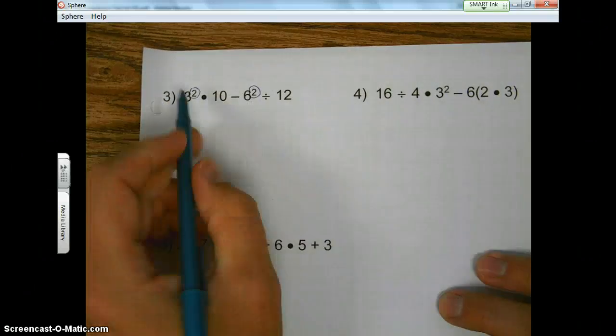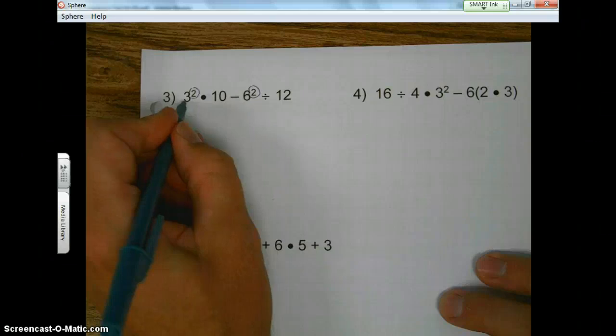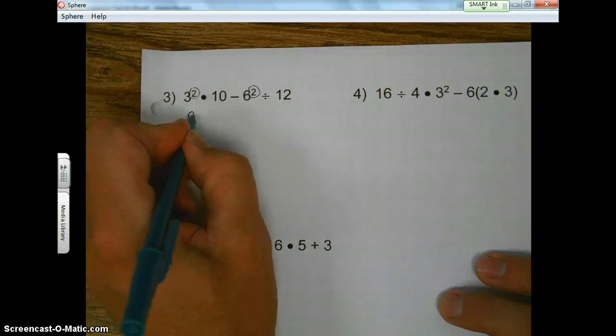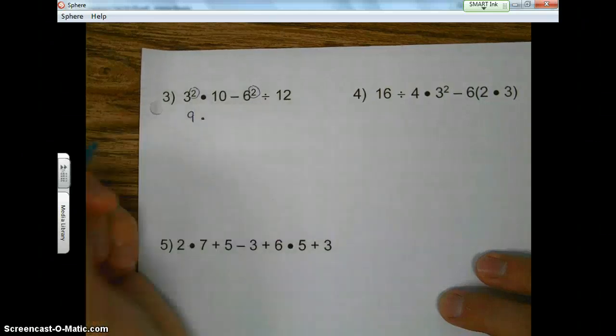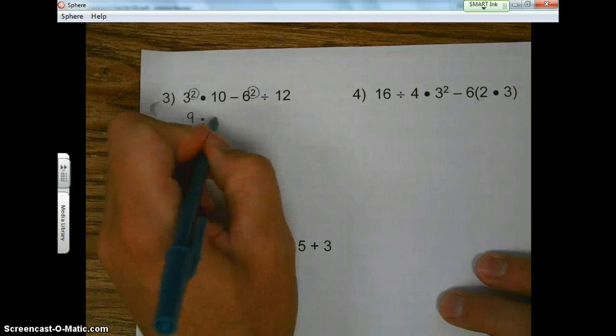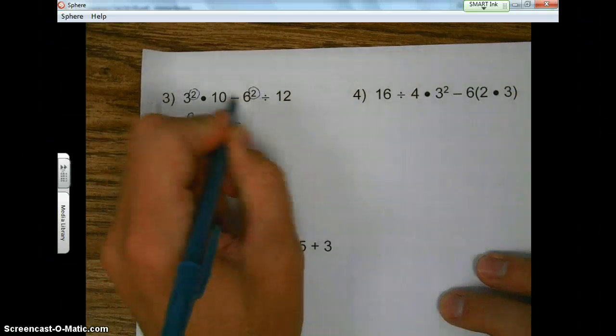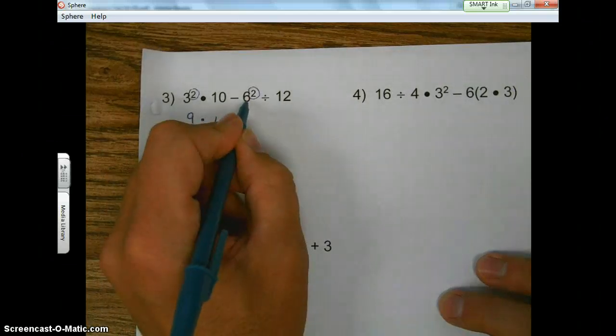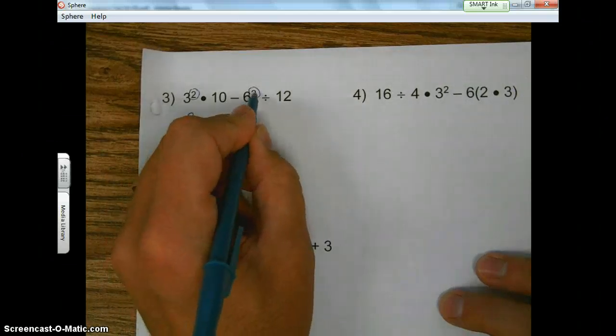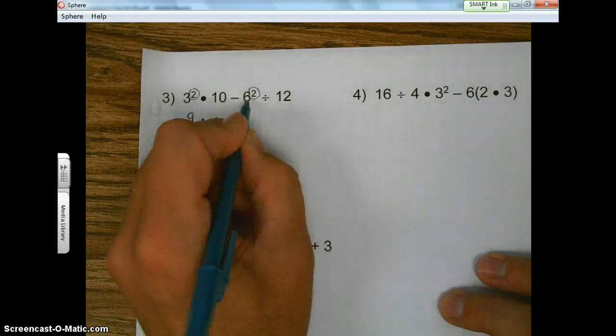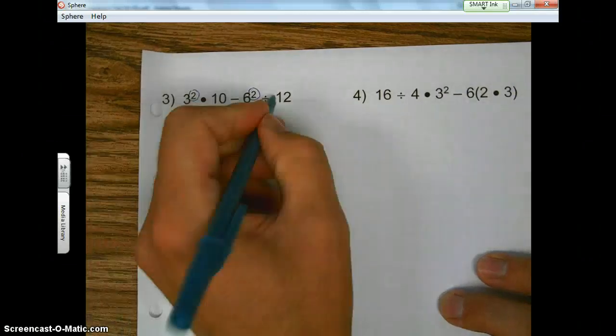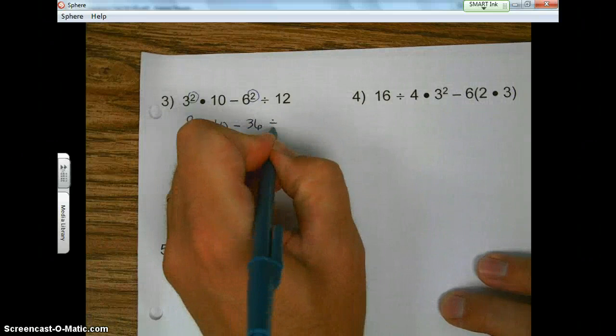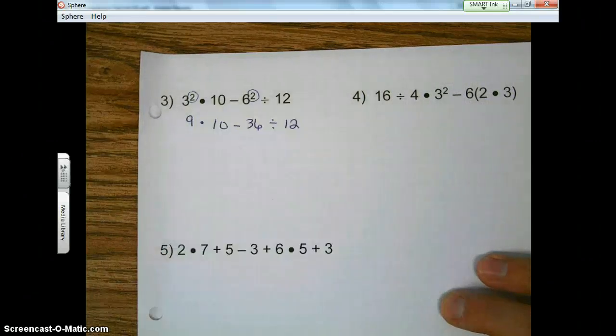So we're going to multiply 3 how many times? Correct. 2 times. So we have 3 times 3, so we get 9. Bring down the dot product, the 10. We're going to multiply the 6 how many times? Twice. So 6 times 6, 36. Bring down the division, bring down the 12.